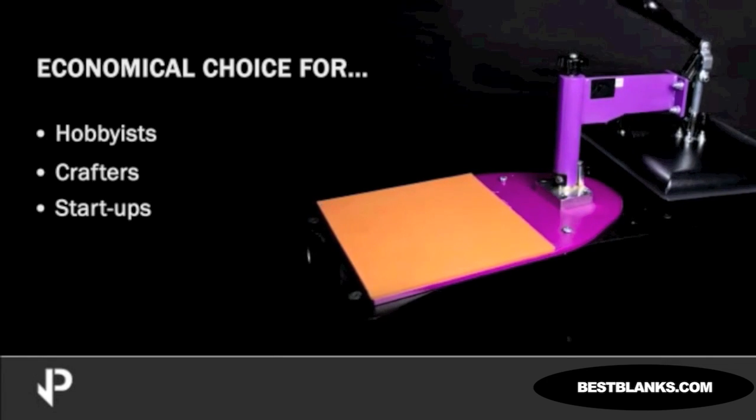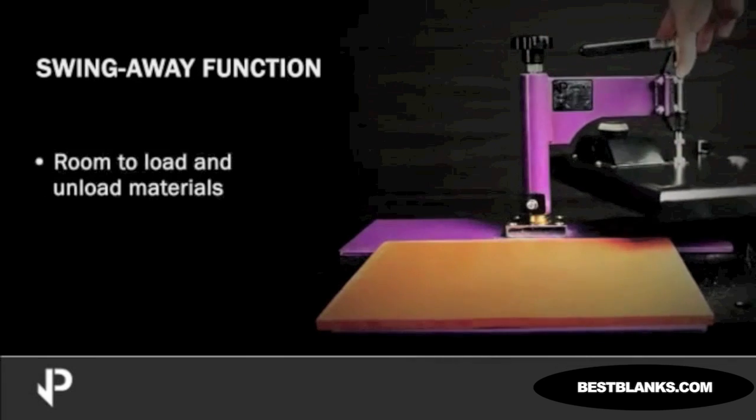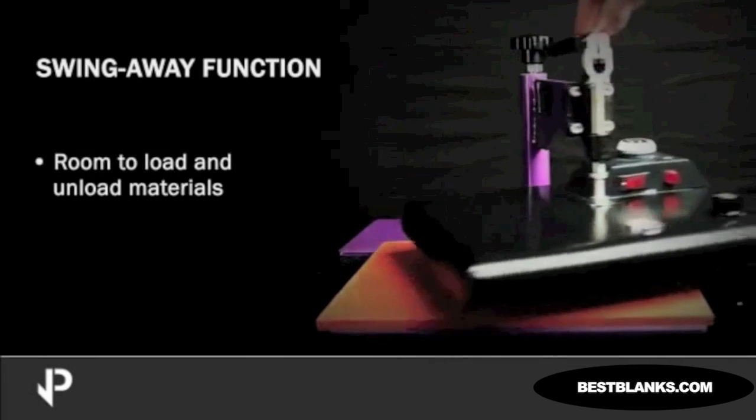A key feature of the JetPress machines is the smooth swing-away action of the press. The flexibility of the swing-away function gives you room to load and unload materials while avoiding contact with the heat platen.